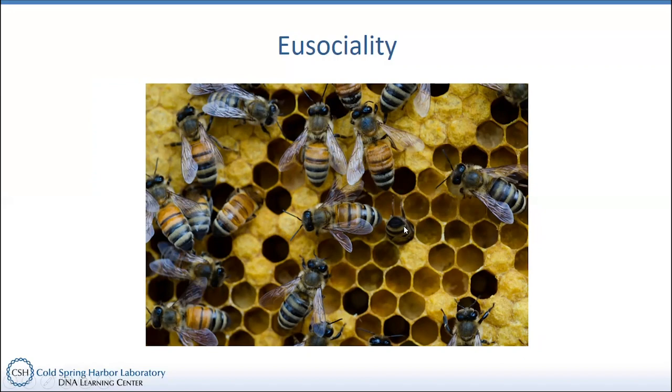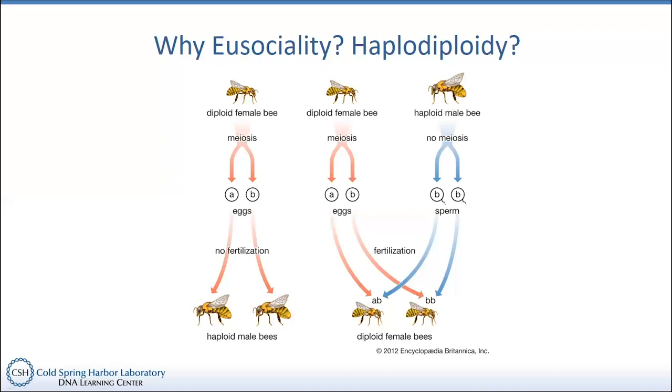Whether we're talking about termites, bees, or ants, haplodiploidy is a commonality among all of them.